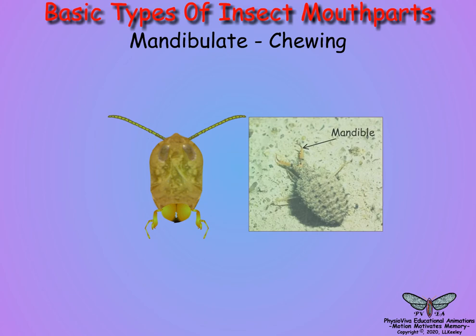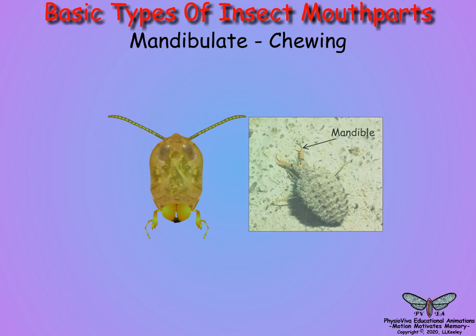In mandibulate species, mandibles can be simple and toothed for biting and chewing food, as in this grasshopper, or they can be elongate for defense or grasping prey, as in predaceous species, such as this immature antlion.